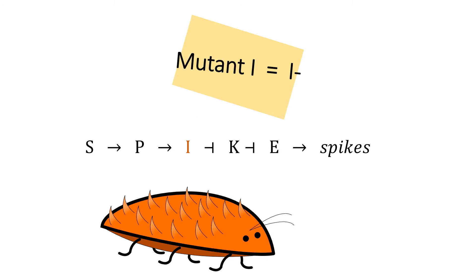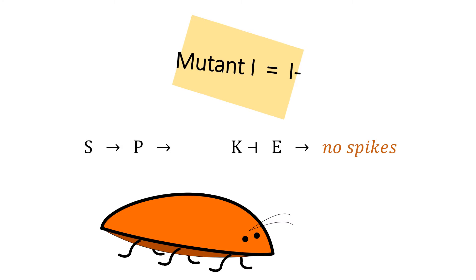If a cell has a mutant I gene, this gene product will not be able to inhibit production of the K product. Again, the active K product will inhibit transcription of E's product, ending in no spike protein production. If all of the beetle's ectoderm cells had a mutant I gene, it would be totally smooth.